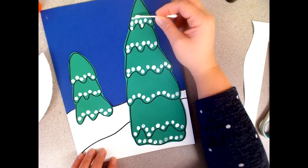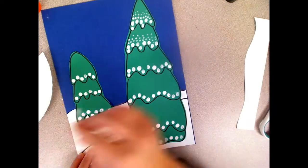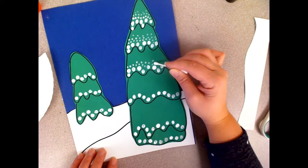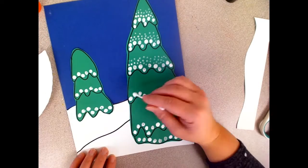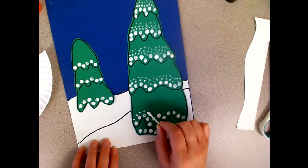After you're done making all of your big dots, use the side of your q-tip and dab on just little tiny dots above the big dots. Make sure you're using the side of your q-tip and not the very end of it.